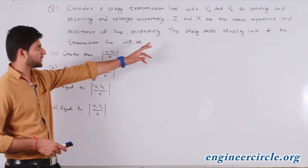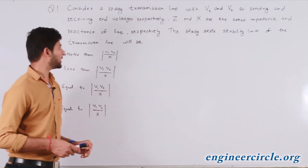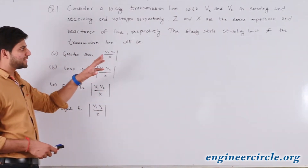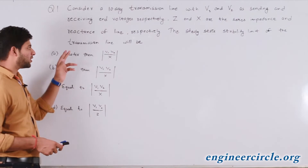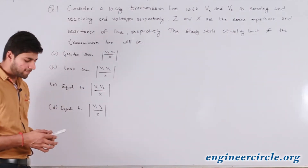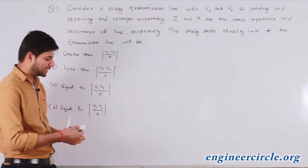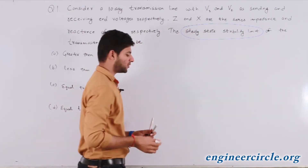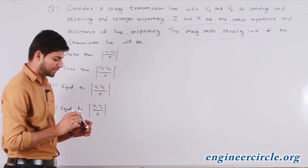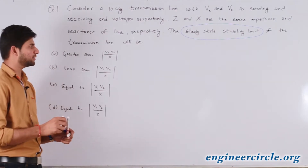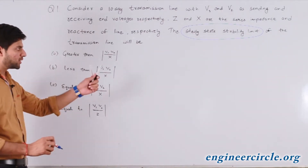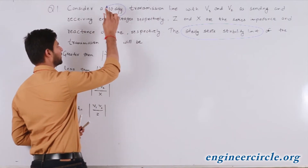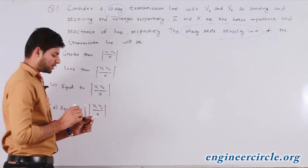Z and X are the series impedance and the reactance of the transmission line. We need to find the value of the steady state stability limit of this transmission line. The steady state stability limit is the maximum value of power flow possible in the line under steady state conditions. We have to calculate this considering a lossy transmission line, as given in the question.